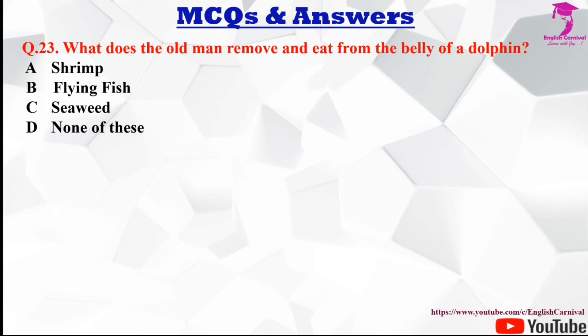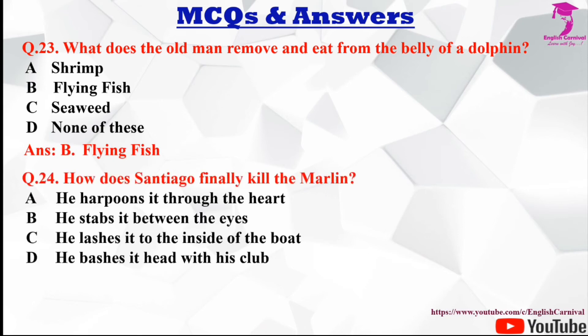Question number twenty-three: What does the old man remove and eat from the belly of a dolphin? Options are A shrimp, B flying fish, C seaweed, and D none of these. The correct answer is B, flying fish.